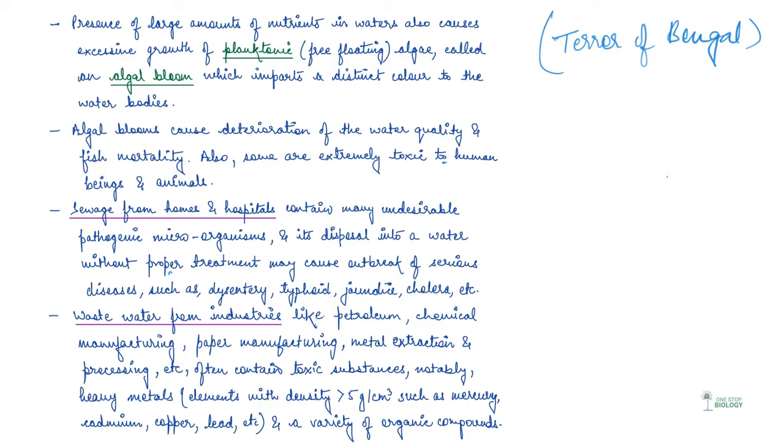Now, unlike domestic sewage, water from the industries like petroleum, chemical manufacturing or paper manufacturing or metal industry or chemical manufacturing. So what happens there is they contain toxic substances, like they have heavy metals, say, mercury, cadmium, copper, lead. And they also have a lot of organic compounds.